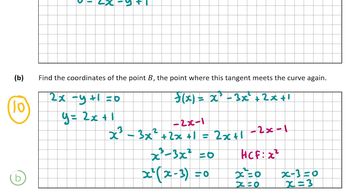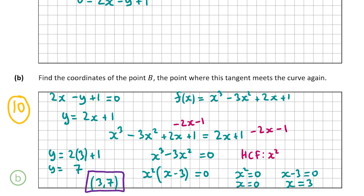Now that we know the x-coordinate of point B is 3, we need to find the corresponding y-coordinate. I'll substitute x = 3 into the equation of the tangent line: y = 2(3) + 1 = 7. So the coordinate of point B is (3, 7), and that's our answer for part B.